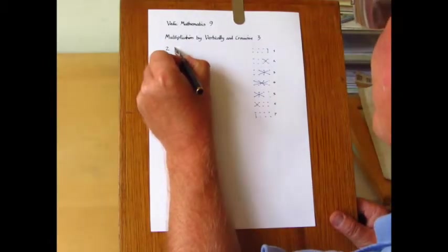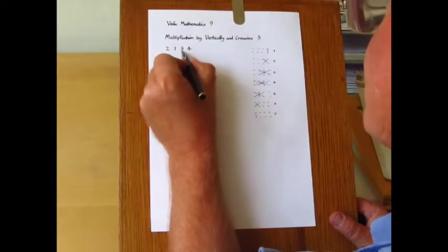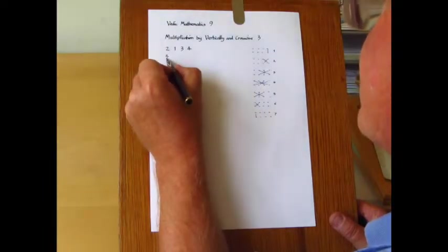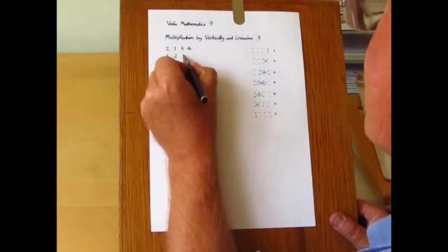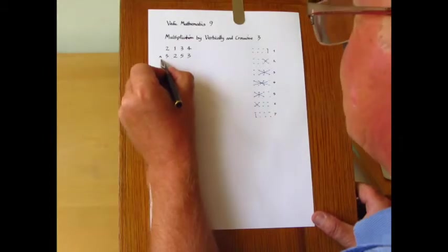And here is an example: 2,134, sorry, 3, 2, 5, 3. I'll keep the digits fairly small at this stage.